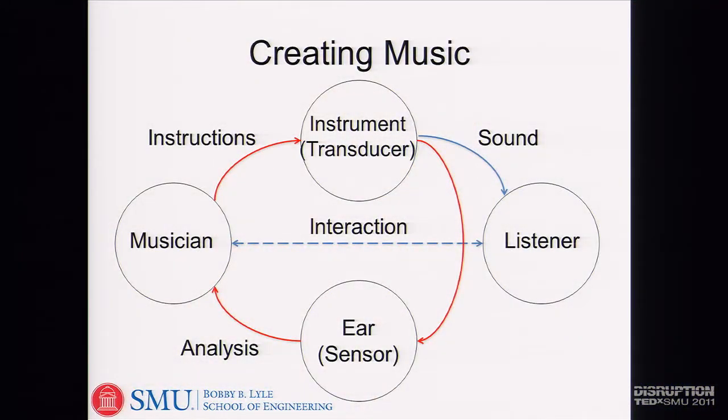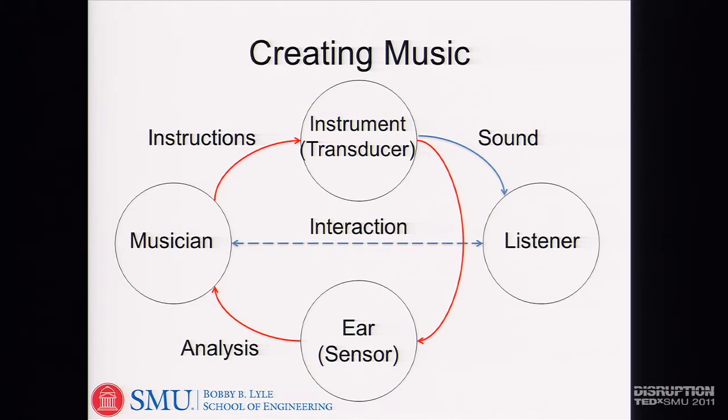You have a musician over on the left who has an idea as to what they want to do. They create instructions that go to an instrument — in this case, a transducer. That transducer creates sound, imparts those instructions, and produces a waveform that is what we hear. It then goes back to the musician who hears it at his or her ear — that's the sensor — which you use as an analysis procedure to adjust what you're doing. This process is fast, on the order of milliseconds, on the order of how fast our brain works.